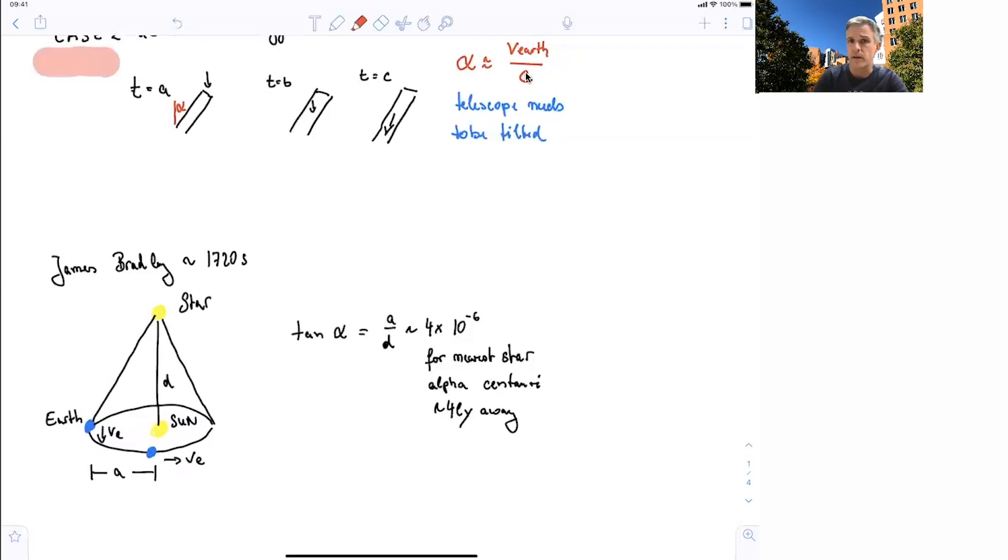The tangent of the tilting angle needs to be equal to the distance of the Earth to the sun over the distance to the star. This angle is very, very small because the nearest star you are able to observe is about four light years away.